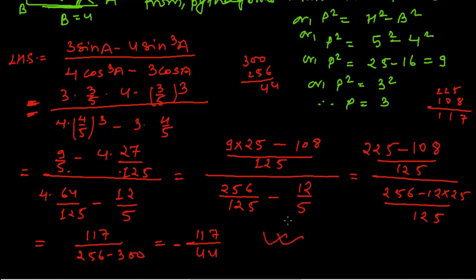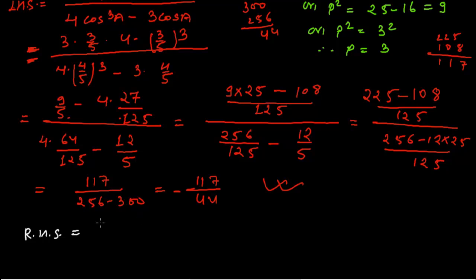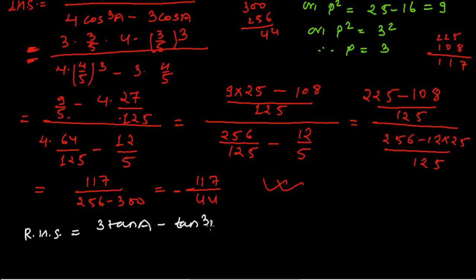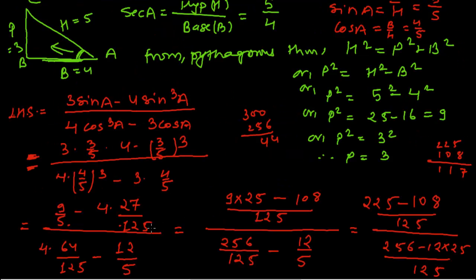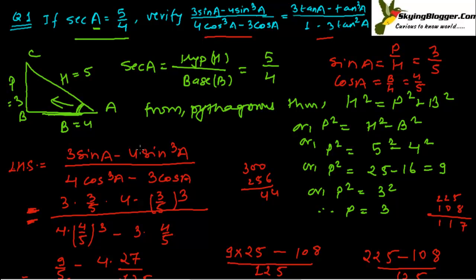Now let's write the right hand side: RHS equals (3 tan A minus tan³ A) divided by (1 minus 3 tan² A). We need the value of tan A. tan A is perpendicular upon base, which is 3 upon 4. So tan A equals 3/4.